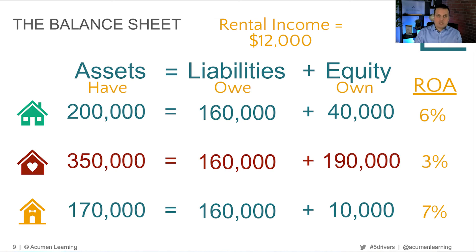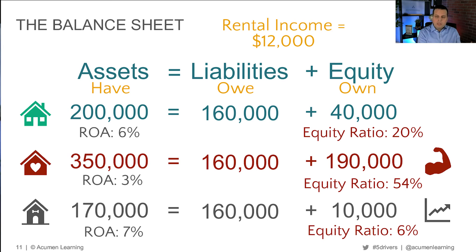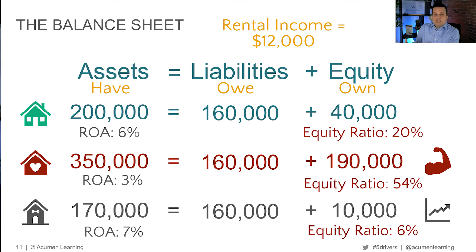The third rental gives us a 7% return on assets. So here's my question: if the second one is the strongest but the third one has the highest return, which one would you want? There's no right answer — it's about what you prefer. If you value the return, you might pick the third one, the riskiest one, but you're getting the highest return. If you value conservatism, flexibility, and stability, you might own the second rental. And if you're more balanced — you want a secure position but also a decent return — you might pick the first one.